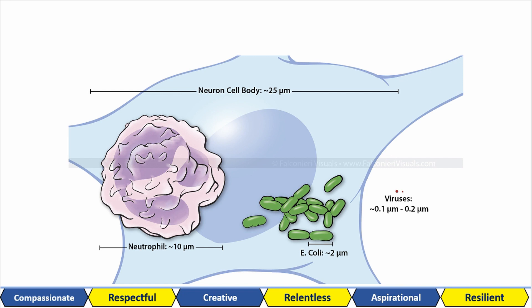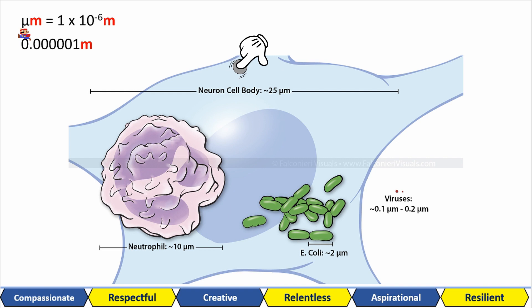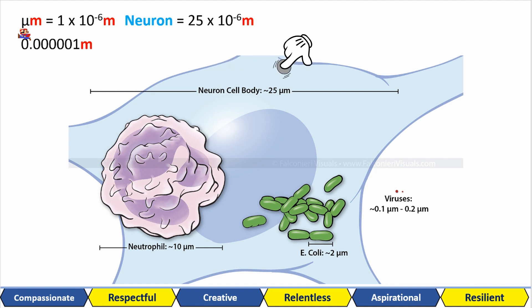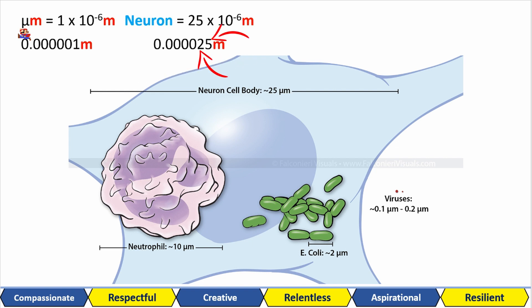If you remember from my video on prefixes, a micrometer is equal to 1 times 10 to the minus 6 meters. That means you move your decimal point six places to the left. This means that 25 micrometers is equal to 25 times 10 to the minus 6 meters, which is technically 2.5 times 10 to the minus 5 meters, because when we move our decimal to the left 6 times we have one less zero.